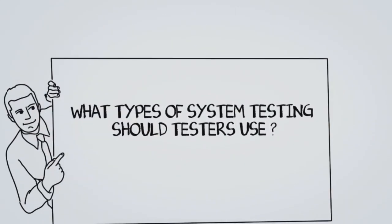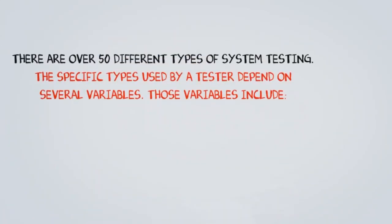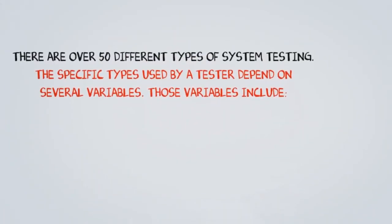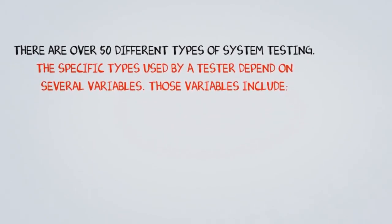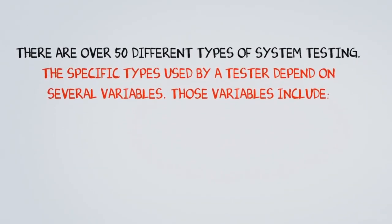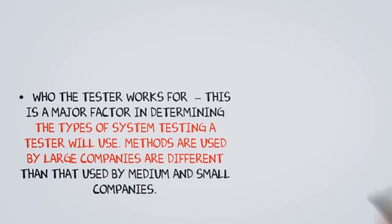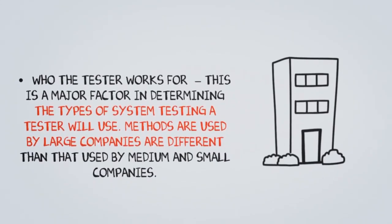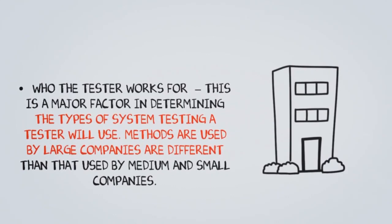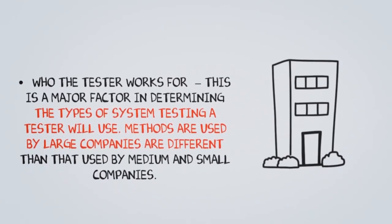What types of system testing should testers use? There are over 50 different types of system testing and the specific types used depend on several variables. One variable is who the tester works for — this is a major factor, as methods used by large companies are different from those used by medium and small companies.